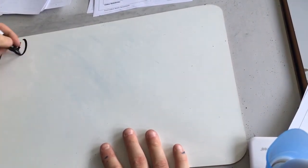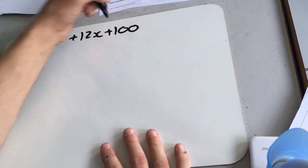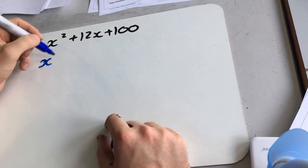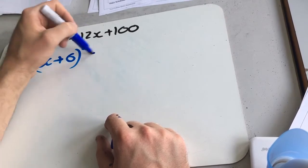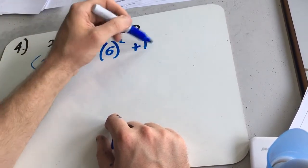Next one, question 4, x squared plus 12x plus 100. Leave the 100 alone. Complete the square on this bit. So x plus b over 2. b over 2 is going to be 6 squared minus b over 2 squared, which is 6 squared plus 100.